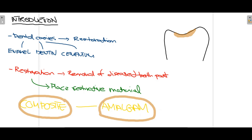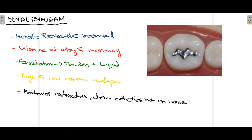The most commonly used restorative materials today are composite, which is more aesthetic, and amalgam, which has a very long history of being very successful, especially in the posterior teeth.